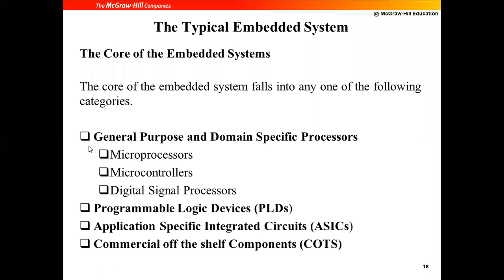The four main categories under the core of an embedded system include: general purpose as well as domain-specific processors, programmable logic devices (PLDs), application-specific integrated circuits (ASICs), and commercial off-the-shelf components (COTS). These are the four major categories under the core of our system. Under general purpose and domain-specific processors, we have microprocessors, microcontrollers, and digital signal processors.